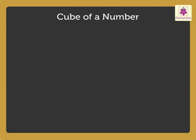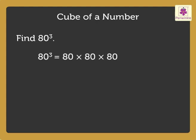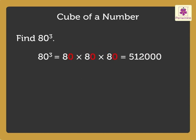Let us try one more example. Find the cube of 80. First, we find the cube of 8. That is, 8 into 8 into 8 is equal to 512. Now, place three zeros after 512. So, we get the answer as 5,12,000.